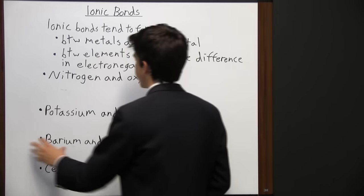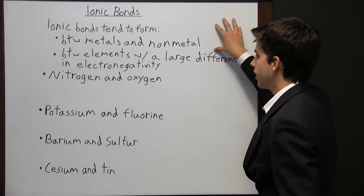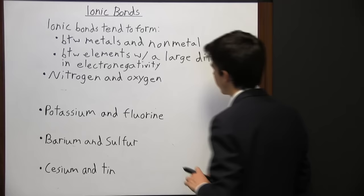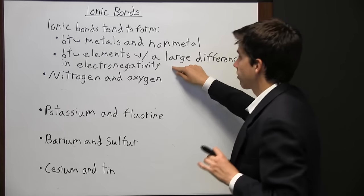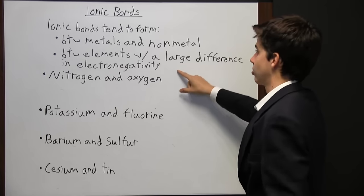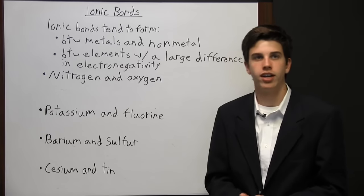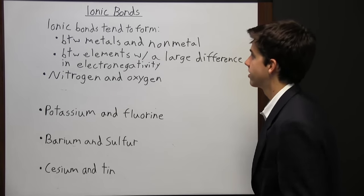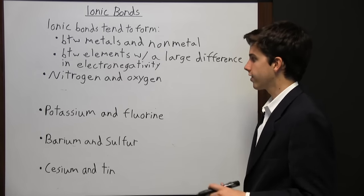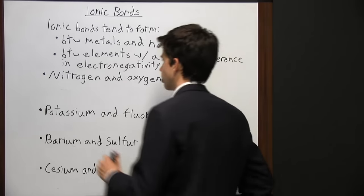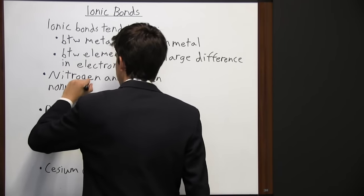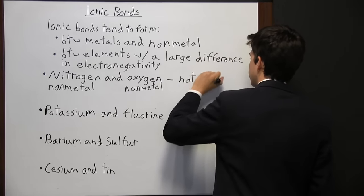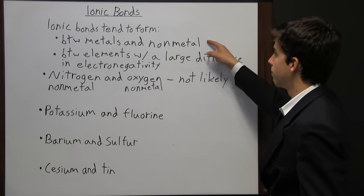Elements with the highest electronegativity values are in the upper right-hand corner of the periodic table of elements, while those with the lowest are near the lower left-hand corner. So if elements meet both criteria — metal and non-metal, with a large electronegativity difference — they are very likely to form ionic bonds. For example, nitrogen and oxygen are both non-metals, so they are not likely to form ionic bonds.